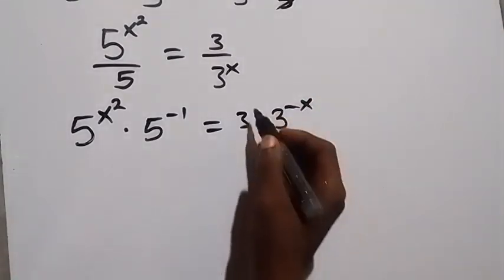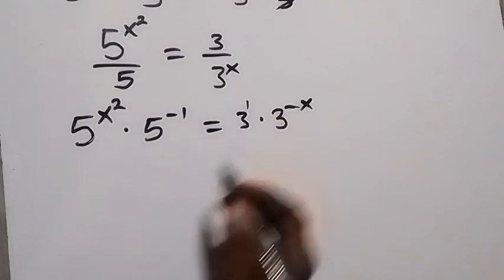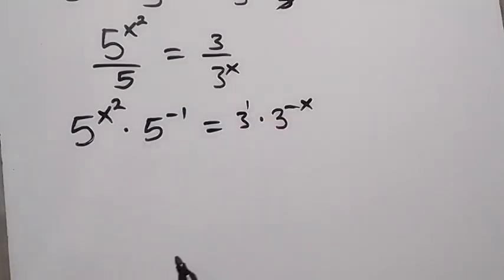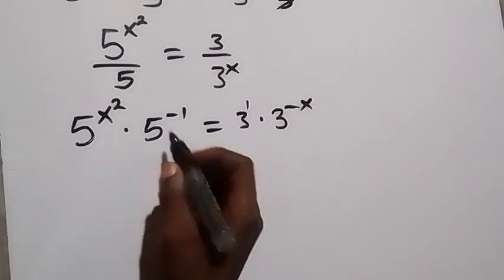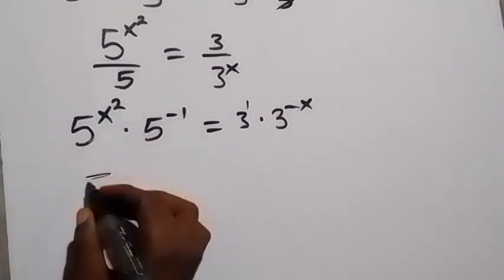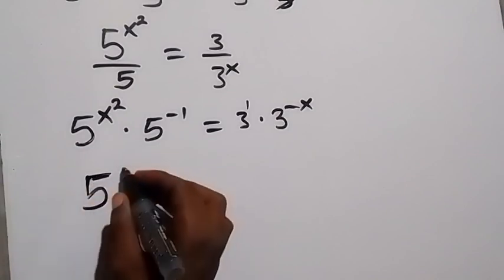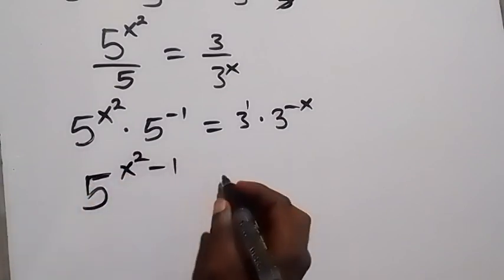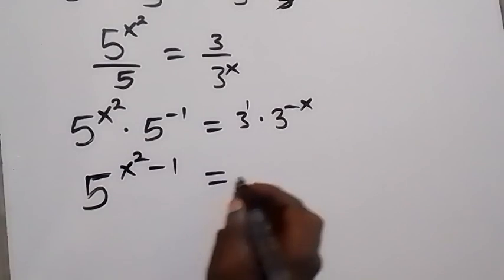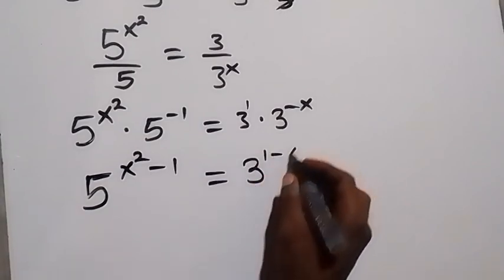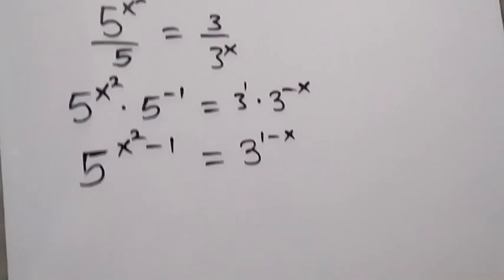This is 3 raised to the power 1. In the next step, applying the law of indices — same base, multiplying — we add the powers. This becomes 5 raised to the power x squared minus 1, which is equal to 3 raised to the power 1 minus x.